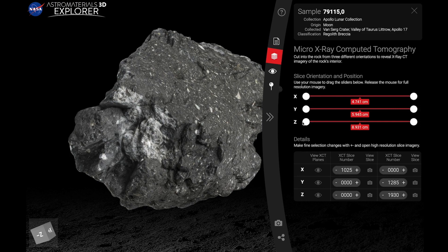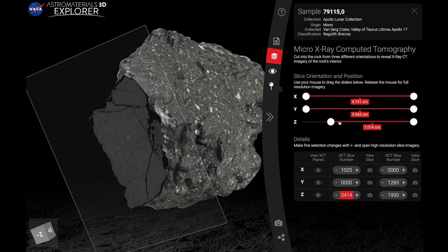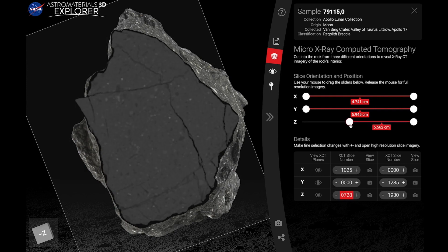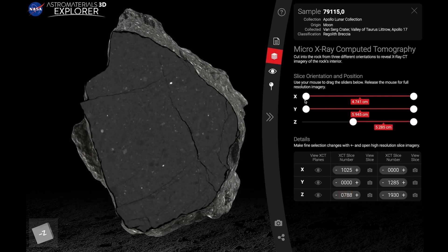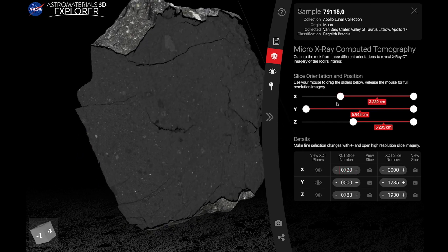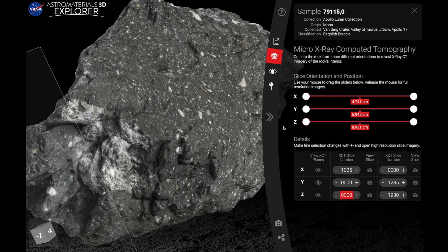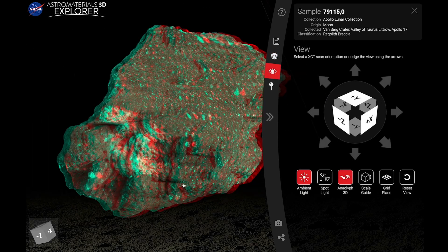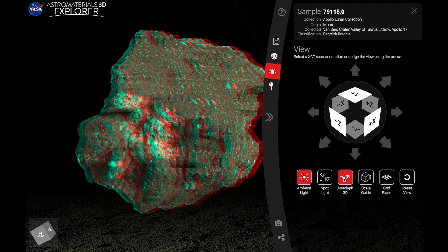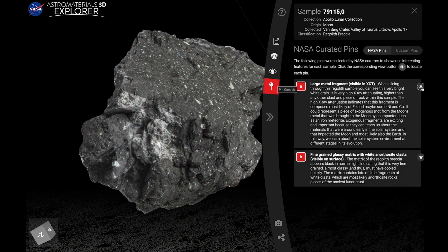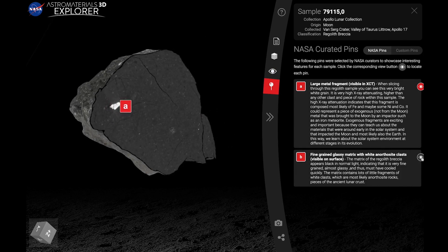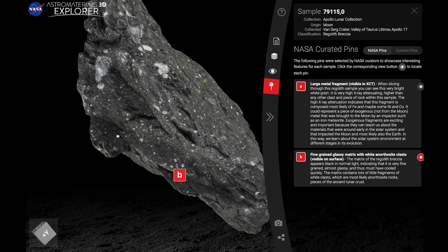The slicing tool allows you to slice through the interior XCT imagery where you can see interesting features. Scientists work with XCT data to begin to learn what the rock is composed of, since density in X-ray imagery is related to a material's atomic weight. If you have anaglyph glasses, you can also view the rock in real 3D space too. The NASA pins section shows you regions of interest, like this bright spot showing a large fragment of metal or the rock's fine-grained glassy matrix filled with anorthosite clasps.